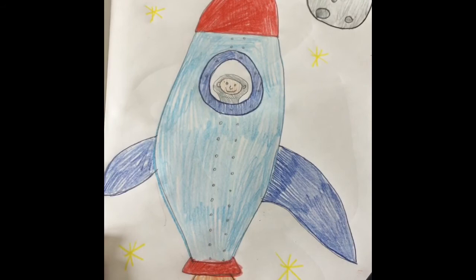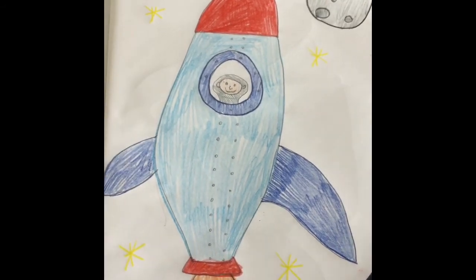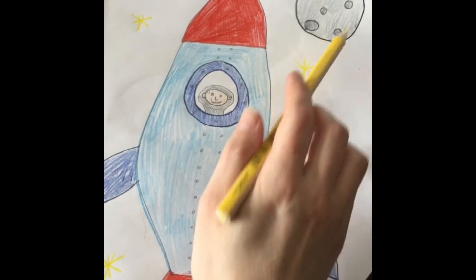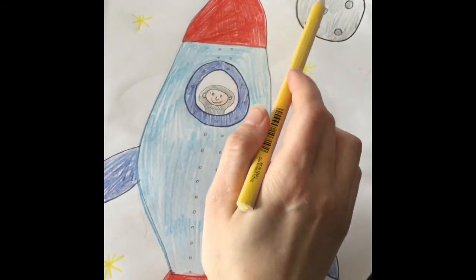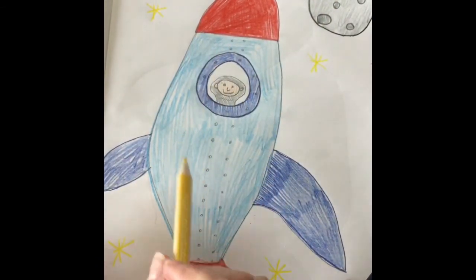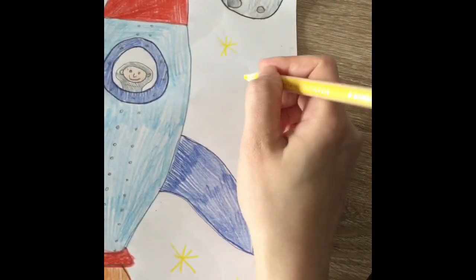Well, there you go. So that's my rocket. While I was coloring in, I thought, oh, why don't I add a moon to my picture? So I drew a moon with a circle and then drew in some of the craters that are on the moon. And then I've drawn some stars as well. So I thought I'd show you how I did the stars.